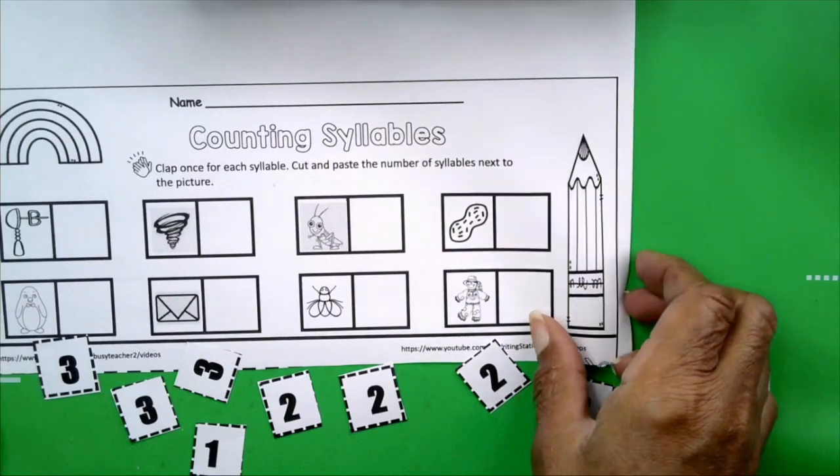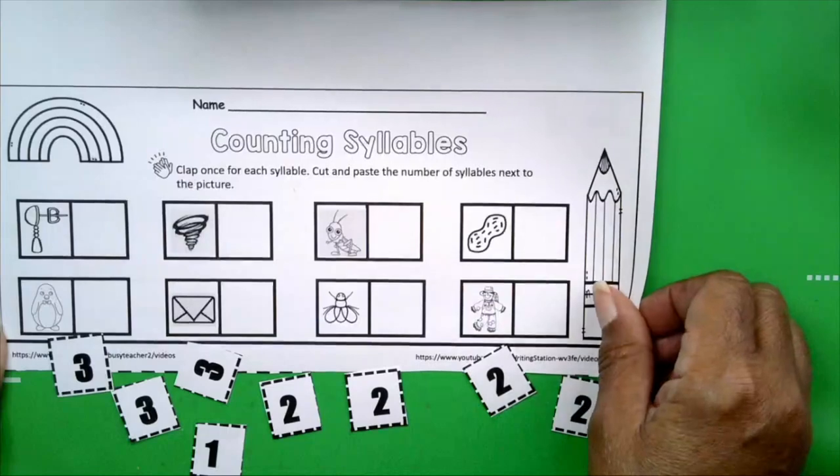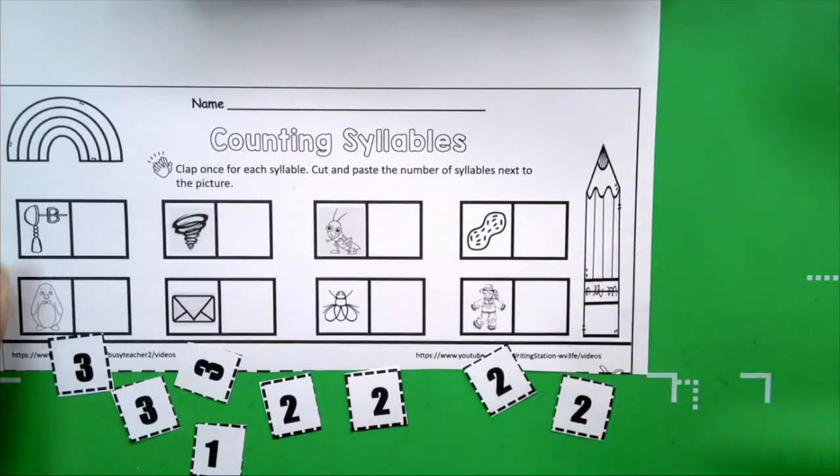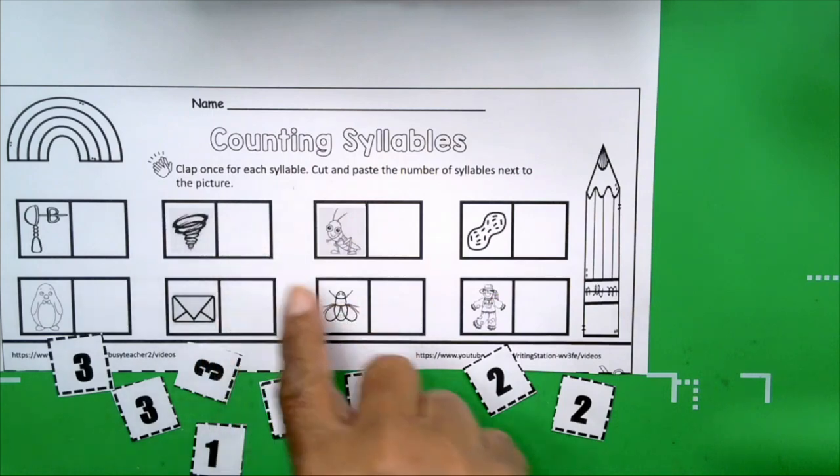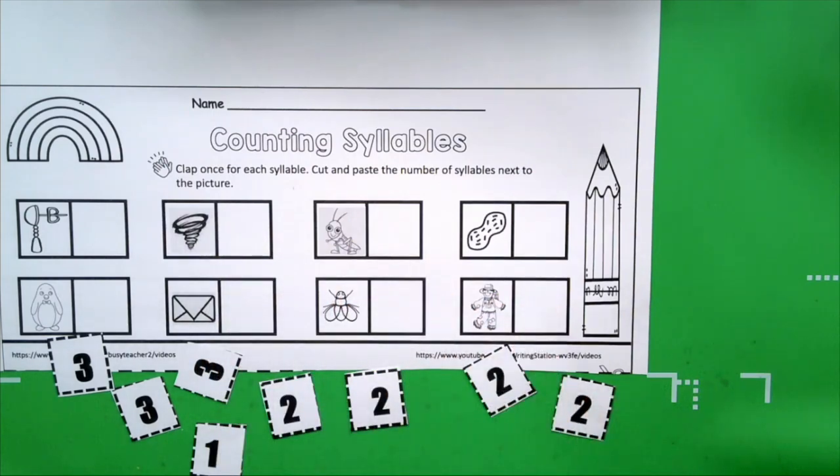Okay, here we are. I have all my pictures in front of me. I have eight pictures and I have eight cutouts. These numbers, one, two and three, when we paste them next to the picture, they're going to tell us how many syllables are in that word.